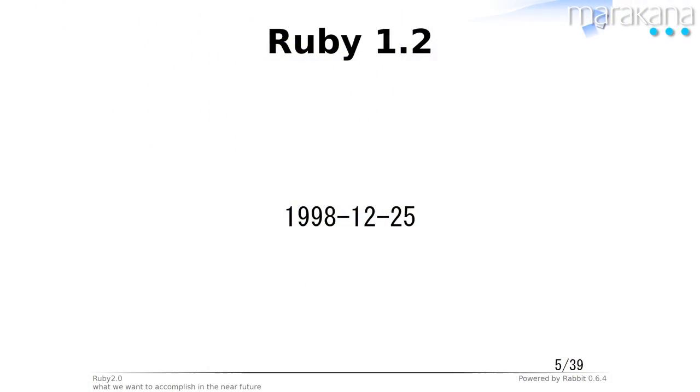Ruby 1.0 was sleeping in your Christmas stocking while you were in bed, because the Japanese time is 18 hours ahead of the United States. Ruby 1.2 was released in 1998 on Christmas day, and Ruby 1.4 in August. In Japan we have a small holiday season in mid-August called Obon, rooted in Buddhist tradition — I enjoy holidays anyway. So I released Ruby 1.4 during Japan's summer holidays.